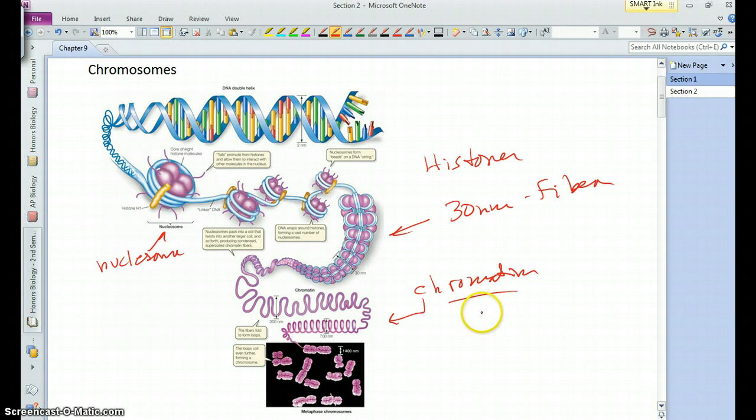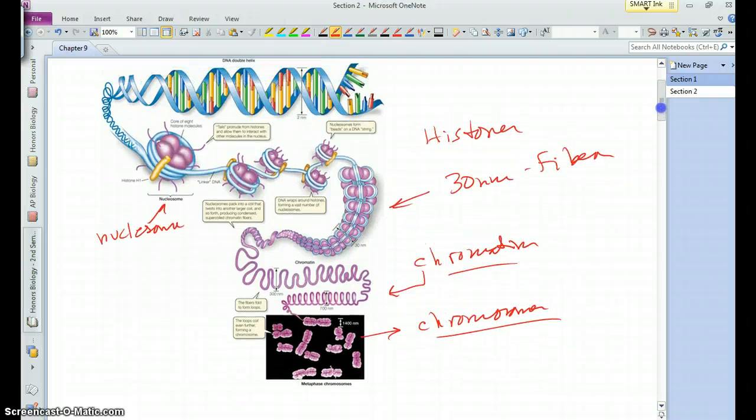Then what happens is the chromatin, when a cell is getting ready to divide, will bunch up even more into extremely tight bunches that we can see under a microscope. It's at this point that we can make out the distinct chromosomes. Before, when a cell is not dividing and you can't see the chromosomes, they are there. We still have our 46 chromosomes that we have as humans. It's just that they're in a more diffuse state, this chromatin state. This is the levels of the packaging of the DNA into chromosomes.